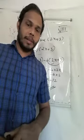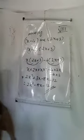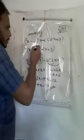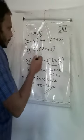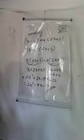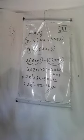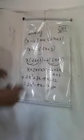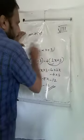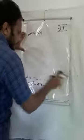So the answer is 2x squared minus 5x minus 12. These are unlike terms, so we can only add or subtract like terms together. I hope you understood this — you multiply each term with every term.